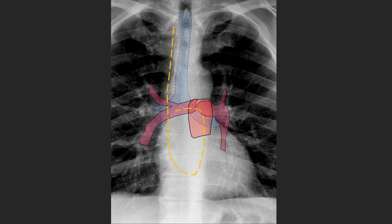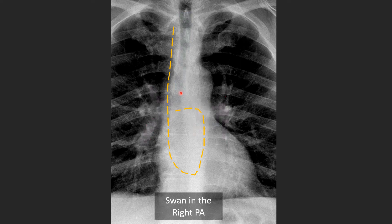Here's a catheter within the right pulmonary artery. We can see it entering the main pulmonary artery and then having this horizontal course. We can see that it terminates below the right main stem airway, which is in here.